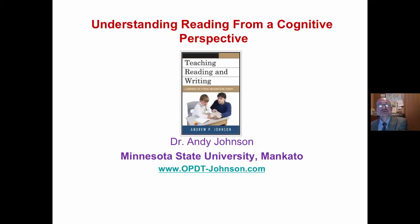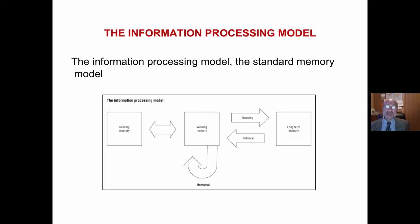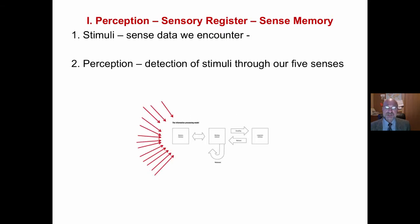Andy Johnson, Minnesota State University, looking at understanding reading from a cognitive perspective, sometimes called the information processing model or the standard memory model. This model is key in the field of cognitive psychology to understanding how we process the world in general, and in this case, how we look at reading.